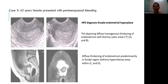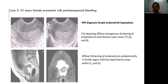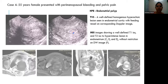Case 3: a 20-year-old female presented with perimenopausal bleeding. On transvaginal sonography, it depicts diffuse homogeneous thickening of the endometrium with a few tiny cystic areas. On MRI, diffuse endometrial thickening predominantly in the fundal region with tiny hyperintense areas within it. On histopathological diagnosis, we have simple endometrial hyperplasia.